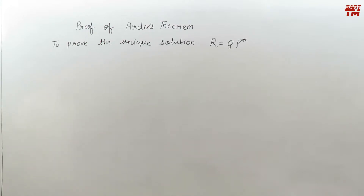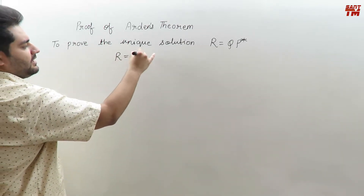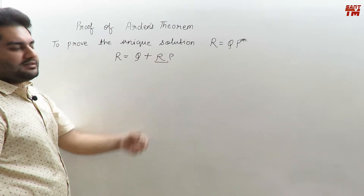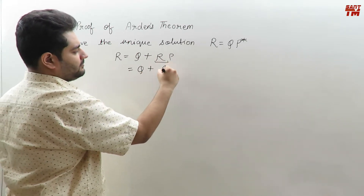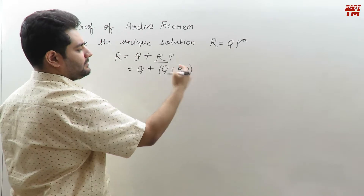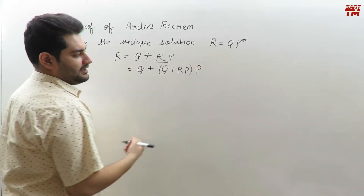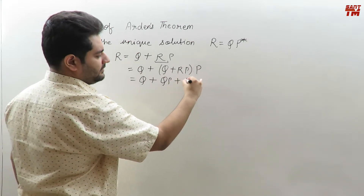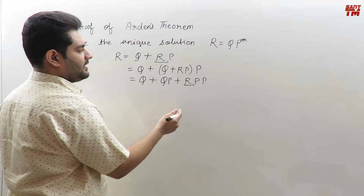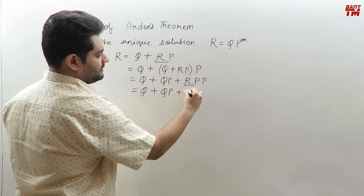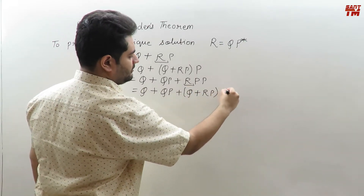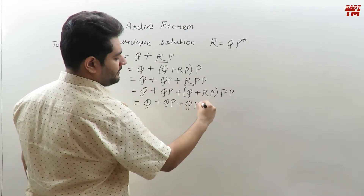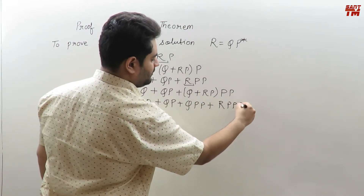Now in the second part, the equation is R equals Q plus RP. In place of R on the right side, we substitute Q plus RP again: Q plus (Q plus RP)P, giving Q plus QP plus RPP. Substituting R once more gives Q plus QP plus QPP plus R·P³. Continuing this expansion we get Q plus QP plus QPP and so on up to infinity.